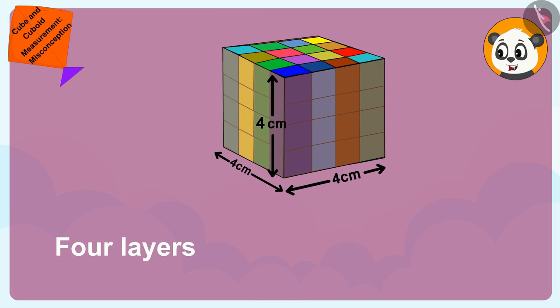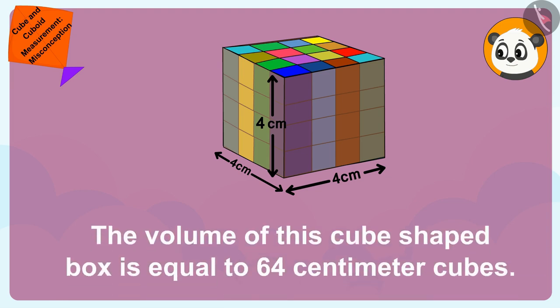We will be able to place 16 times 4, 64 cubes of dimension 1cm each in the cube-shaped box. In other words, the volume of this cube-shaped box is equal to 64cm cubes.